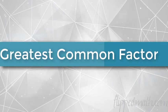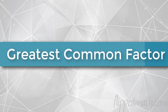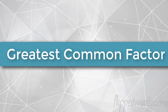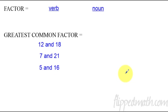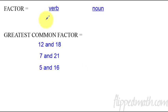Welcome back to another lesson in Algebra 1. This is Mr. Bean, and today we will be talking about the greatest common factor. This is the first lesson in our unit on factoring — extremely important stuff we'll use throughout Algebra 2, pre-calculus, and even calculus. So this is a great place to start, and I think you'll enjoy 9-1 because it really is one of the easier lessons of the year.